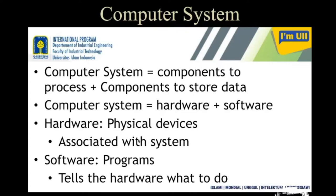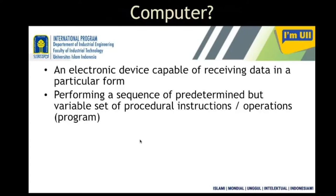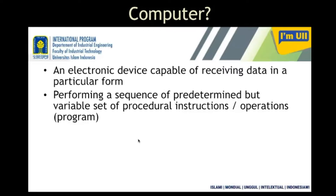A computer is an electronic device which is capable of receiving data in a particular form and performing some set of actions. Those actions are predefined — it's not that whatever you want the computer can perform. If the instruction is not given earlier, then the computer will not be able to perform. That's why it is called a sequence of predefined instructions.